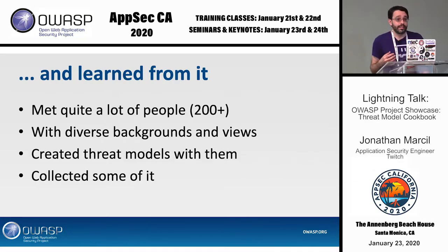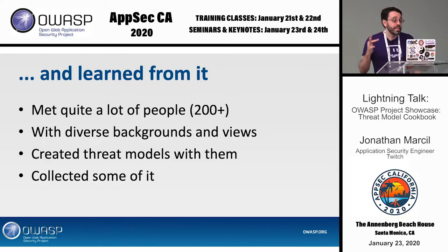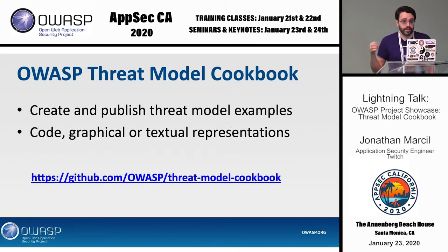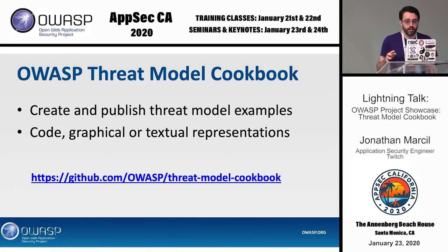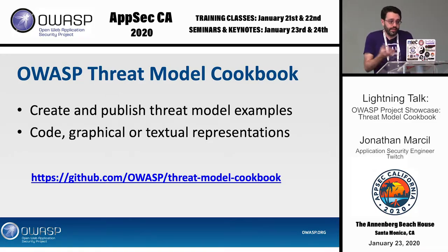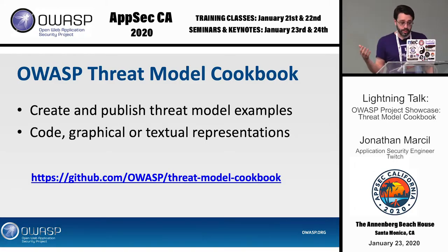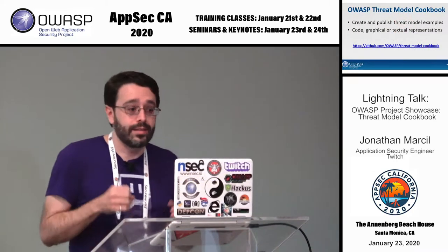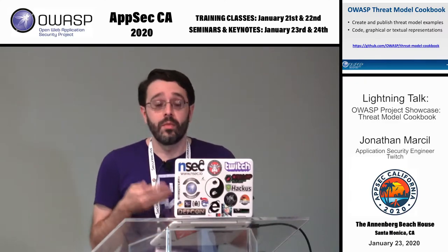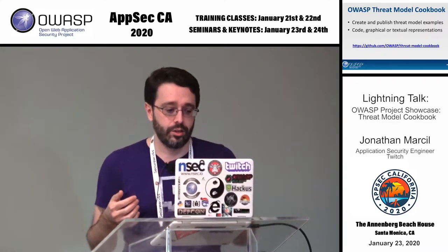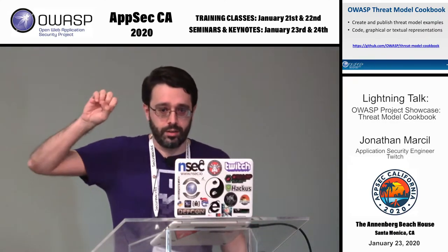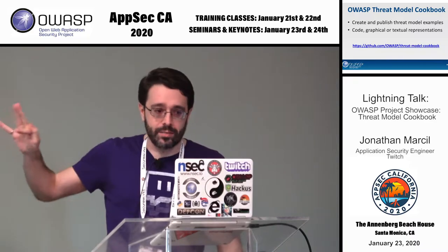What I did is I collected some of those examples and rebooted an OWASP project that was already existing but had been left inactive. It was called Threat Model Cookbook. The idea is that we will create and publish threat model examples — either graphical or textual representations. It's all on GitHub and it's an official OWASP project.